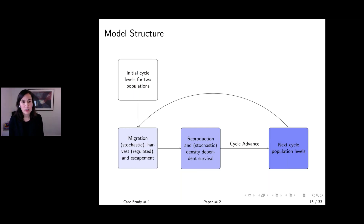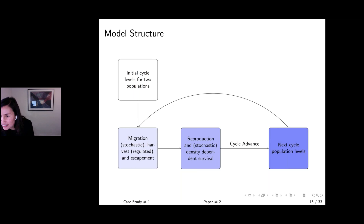We explore what happens when you have population diversity and population-specific values due to the potential branding of salmon from a region, using a conceptual bioeconomic model.